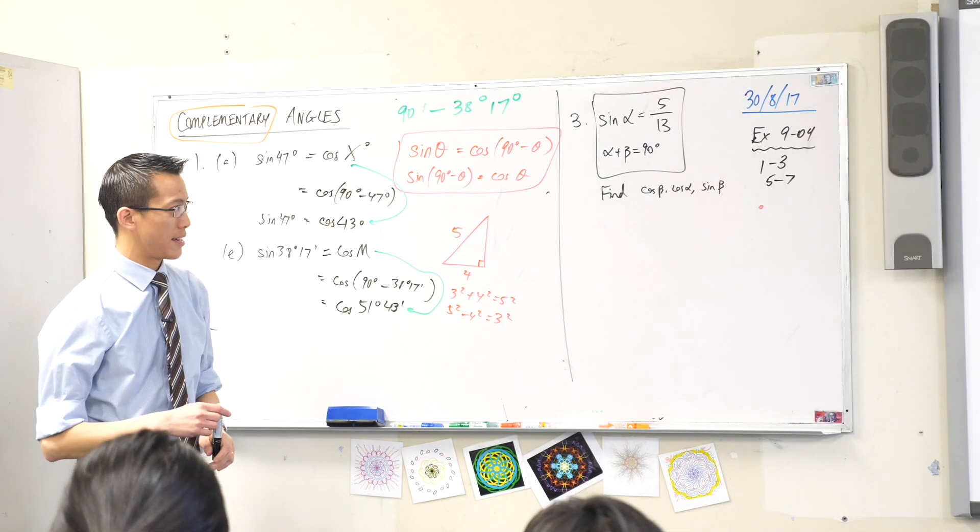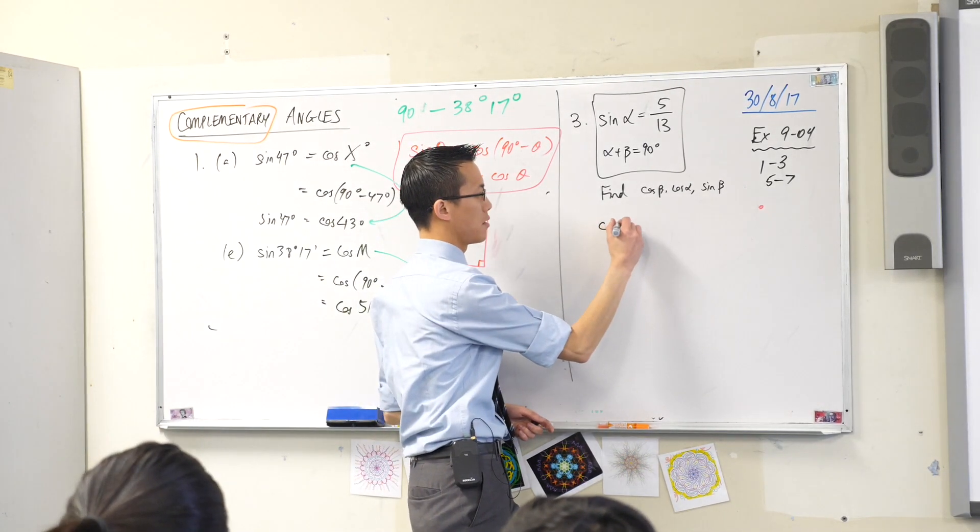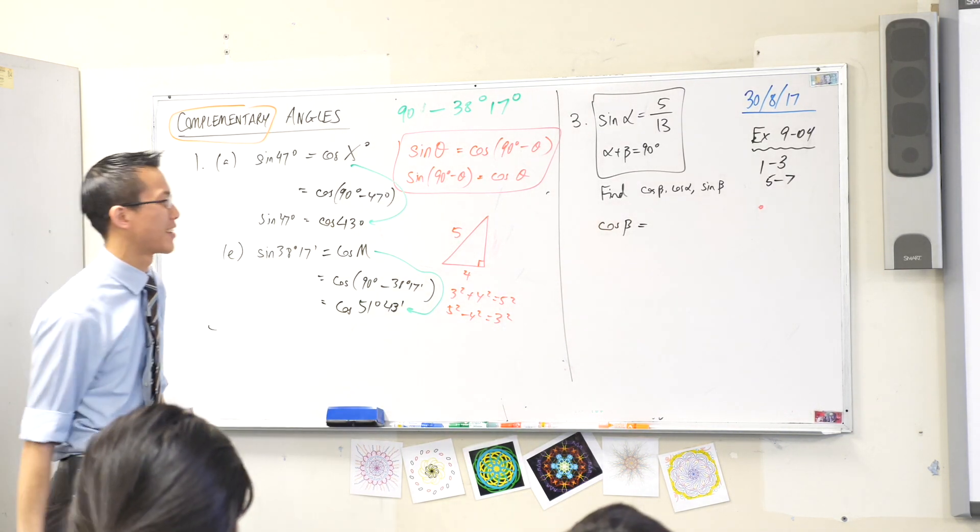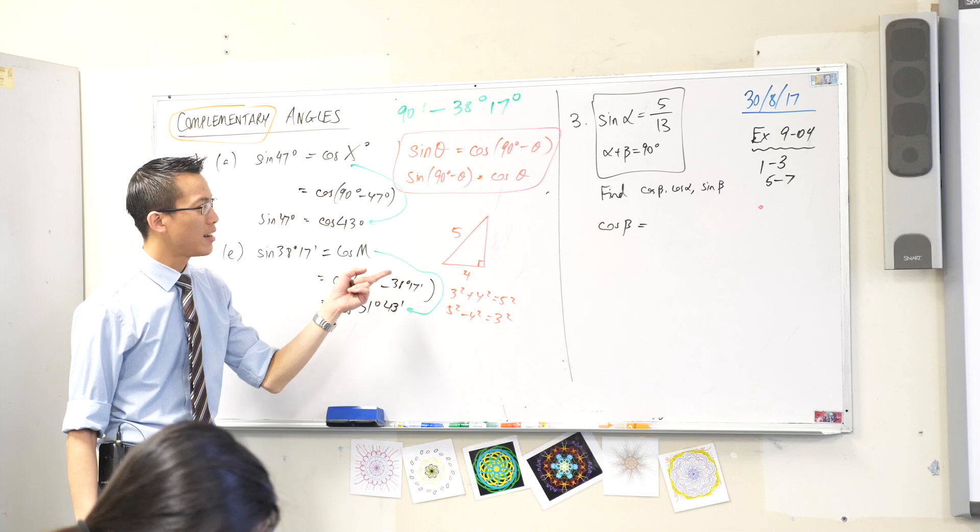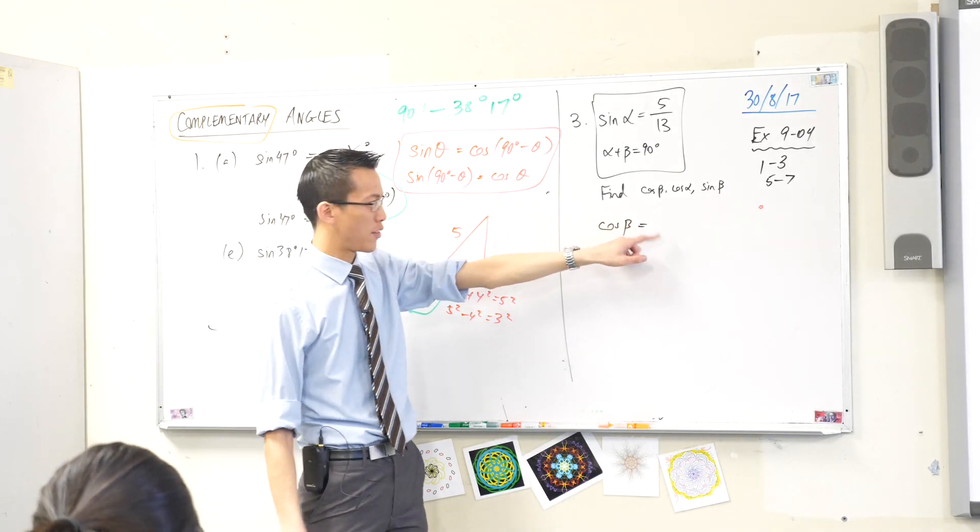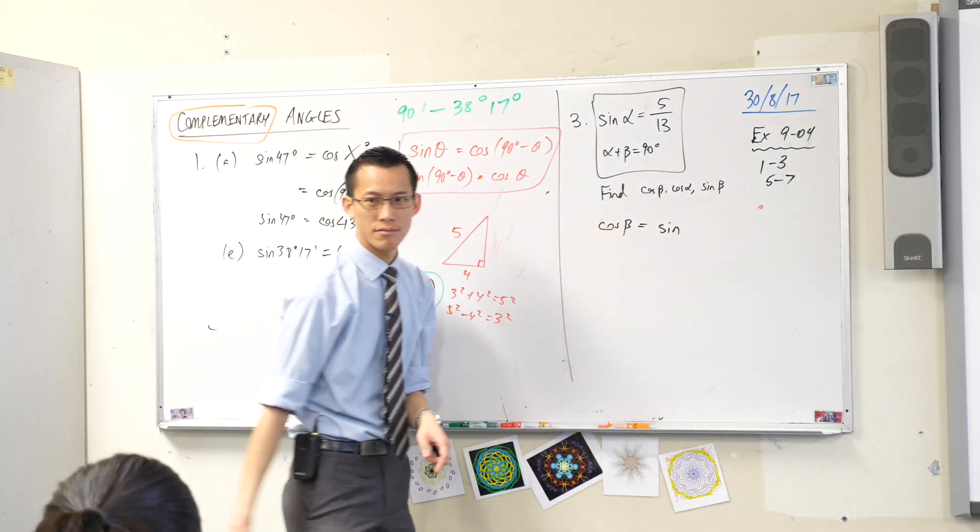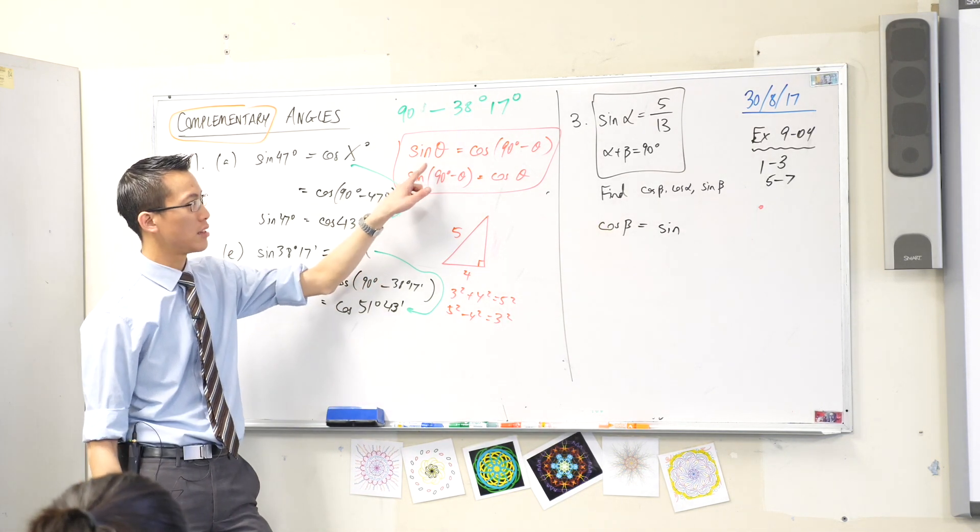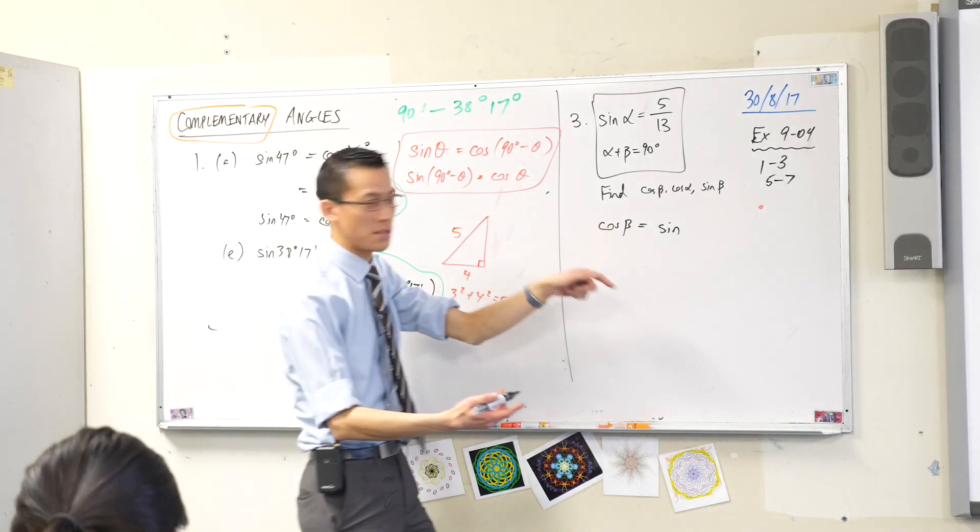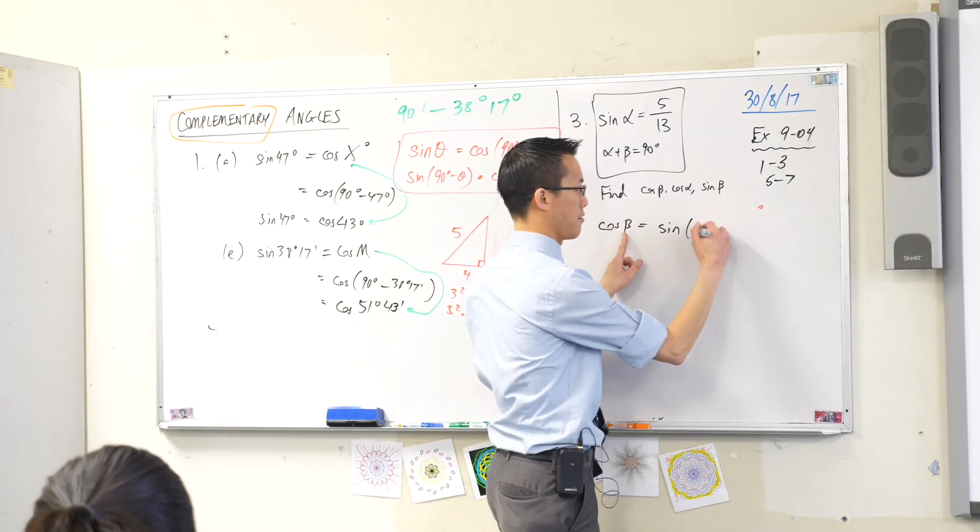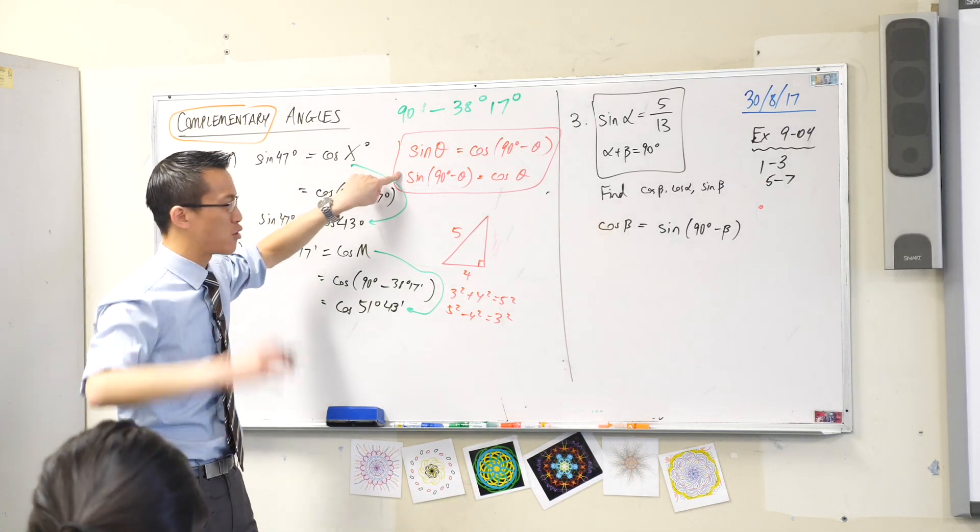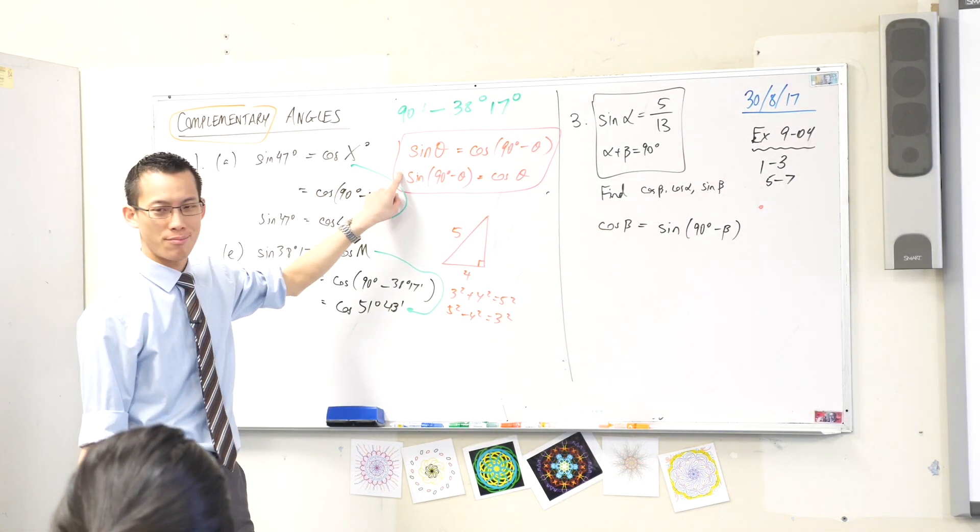Find cos beta. I'm going to write it like this: Beta, that's that Greek letter, it's a B with a tail on it. Cos beta is equal to, have a look at it, this is sine of, this is this situation here, it's going to be the complement of beta which is 90 minus beta. Does that make sense? This line here is a direct use of this, just with things dressed up with different letters.